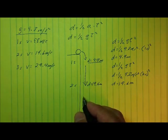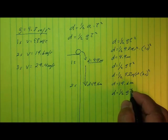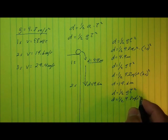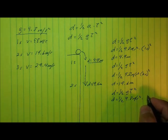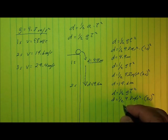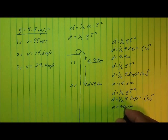How about three seconds? d equals one-half g t squared. g is 9.8 meters per second squared times the time, which is three seconds. We're going to square that. Nine times 9.8 and divide that by two, and we get a distance of 44.1 meters.